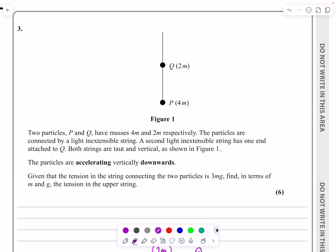It says both particles are accelerating downwards, so I'll put that on my diagram. Then it's going to tell me the tension between the two particles is 3mg, and it's going to ask for the tension in the upper string.